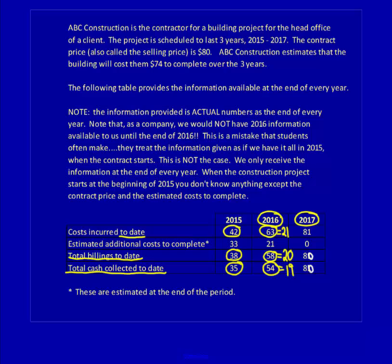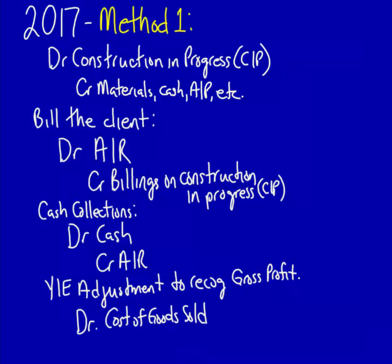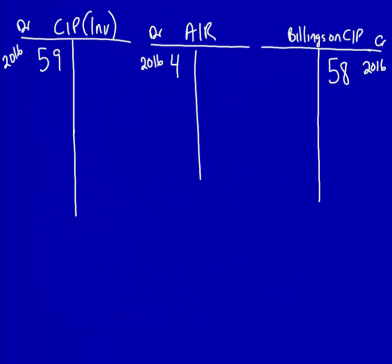2017 costs are $81 year-to-date; 2016 year-to-date are $63. Subtract them to get the costs for only 2017: $18. For the entry, there's a debit to CIP for $18, then a credit to materials, cash, accounts payable, etc., for $18. Record in the T-accounts: debit CIP $18.